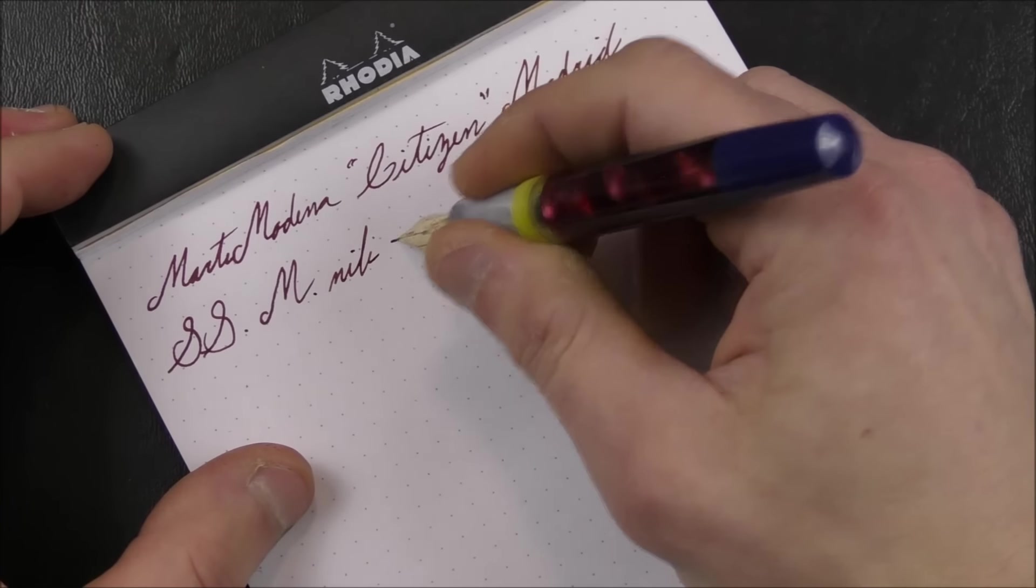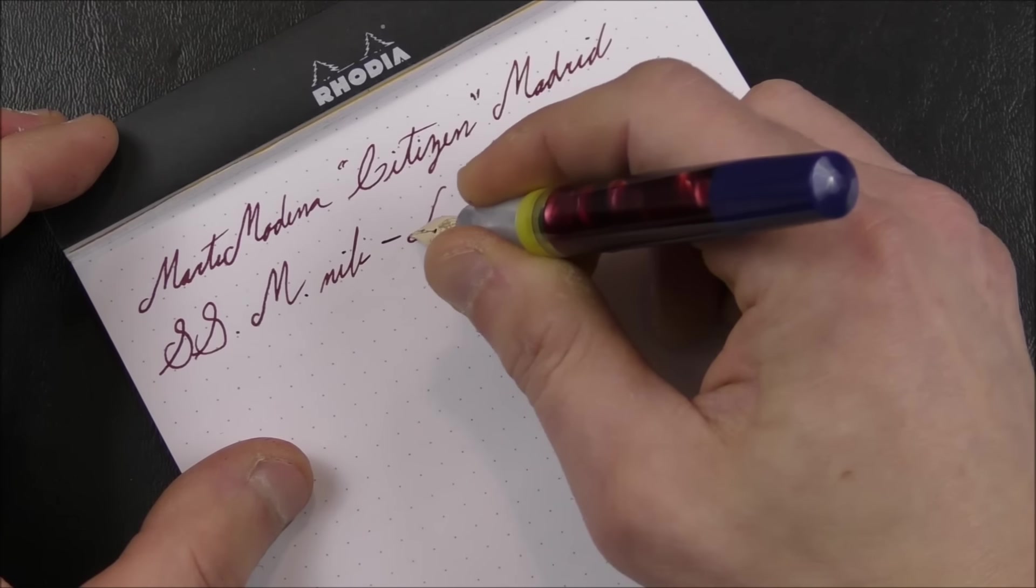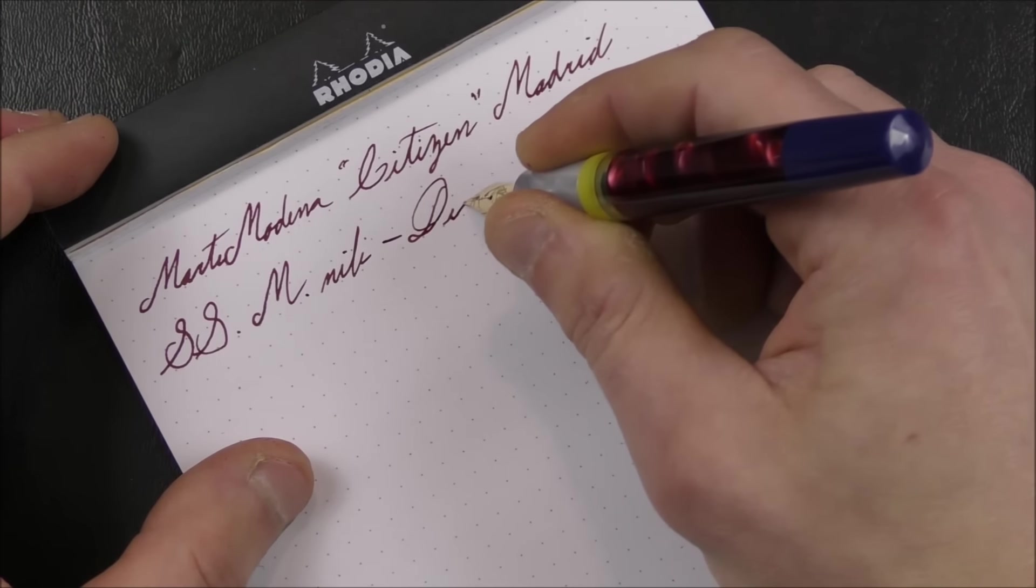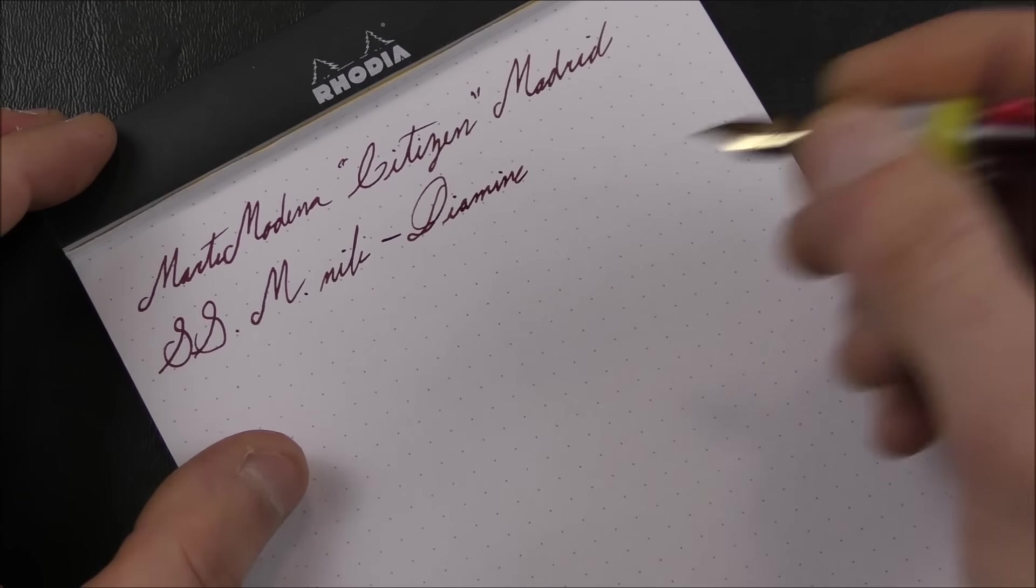A stainless steel medium nib. And it is filled with, what do I have in this? I think it is Diamine Oxblood. One of my favorite inks, one of my favorite Diamine inks.